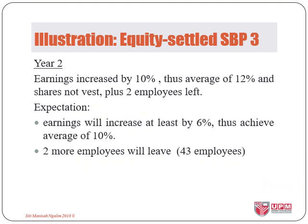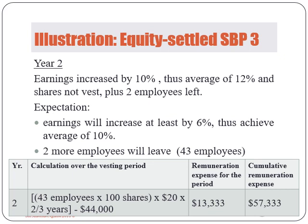At end of year one, we record expense for 100 shares for 44 employees at fair value of $20 for half the vesting period, giving $44,000 of SBP expense. In year two, earnings increased by only 10%, so the average was less than targeted and the scheme was not vested. Two employees left. The company expected that in year three, earnings would increase by at least 6%, giving an average of more than 10%, and two more employees would leave, leaving 43 employees. Therefore in year two, we record SBP expense for 100 shares for 43 employees at $20 for two-thirds of the vesting period minus previous recognition, giving $13,333.